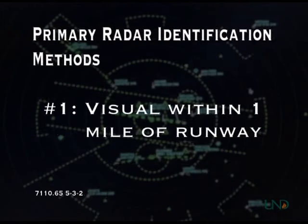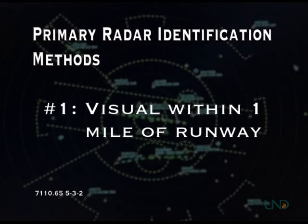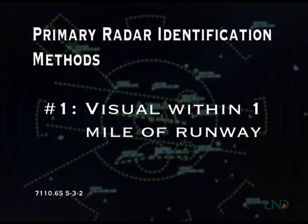The first primary radar identification method is observing a target within one mile of the departure end of the runway. This method is only valid if receiving a rolling call from the control tower. If a rolling call is not received, then another radar identification method must be used.